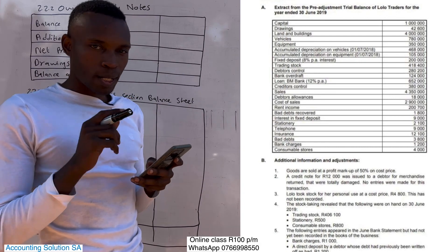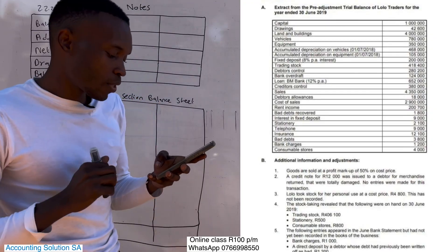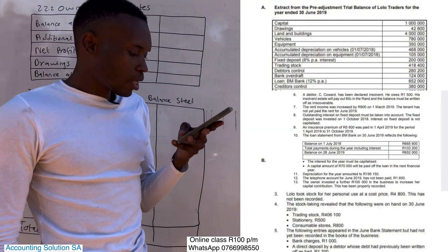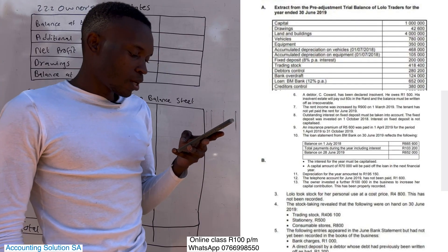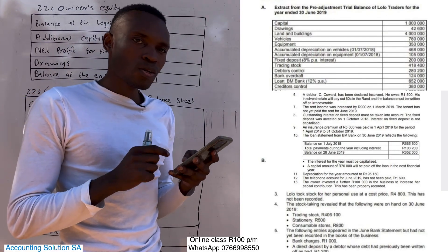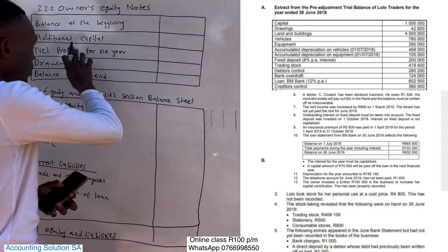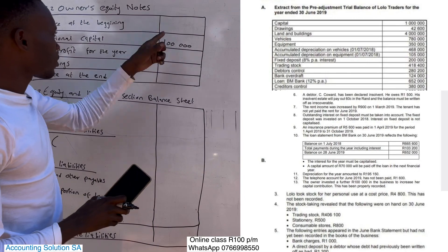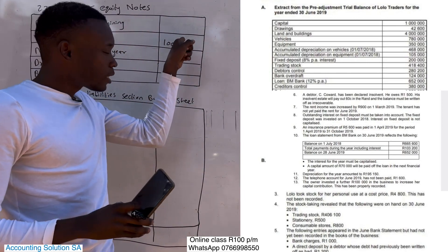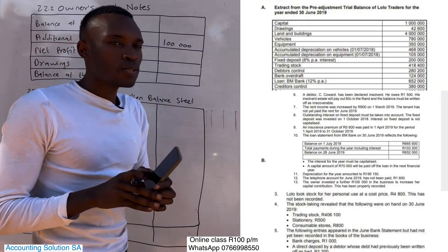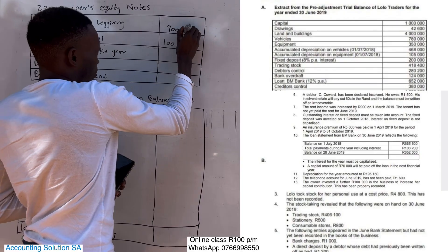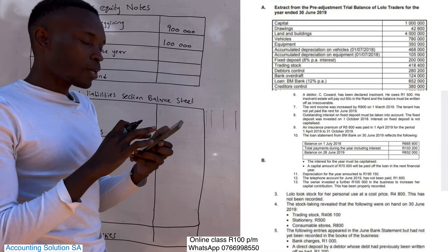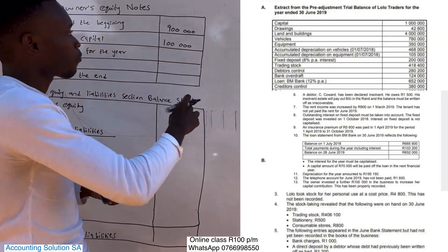We are required to start with the balance at the beginning, which is capital. If you check on our trial balance we have a capital of 1 million, but it was a bit tricky because of additional information number 13. The owner invested a further 100,000 in the business to increase her capital contribution, and this has been properly recorded. This means the 100,000 addition is recorded separately, so at the beginning it was not 1 million — it was 1 million minus 100,000, giving you an opening balance of 900,000.